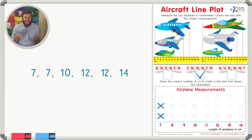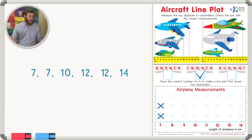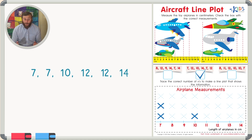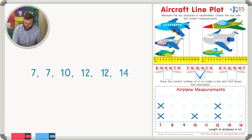The next number is eight, but none of my airplanes were eight centimeters long, so I'll leave it blank. Same for nine — no airplanes, no X's. For ten, there was just one airplane, so I'll trace one X above ten. None were eleven centimeters, so no X's there. For twelve, two airplanes were twelve centimeters long, so I'll trace two X's. None were thirteen, so that's blank. Finally, one airplane was fourteen centimeters long, so I'll trace one X.